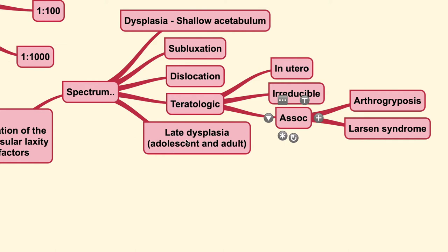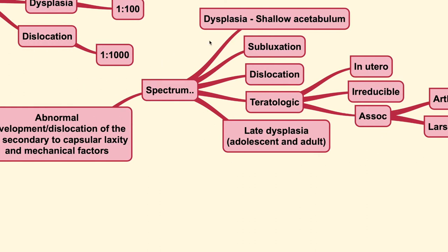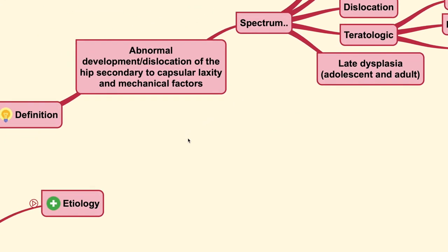At the very end of the spectrum, DDH could present as late dysplasia, which can be seen in adolescent and adult patients. Because these patients generally do not have a normal structure since birth, dysplasia also makes them prone to changes such as osteoarthritis or other associated conditions at an older age.